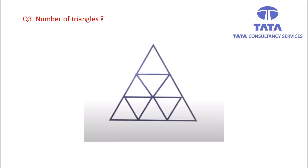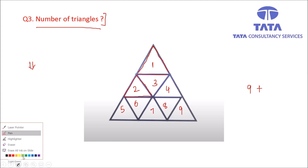Now we need to find the number of triangles in a figure — this type of question appeared in last year's TCS NQT as well. Try to find it yourself first. So: 1, 2, 3, 4, 5, 6, 7, 8, 9 — these are the small individual triangles we can see. Then there is the outer big triangle — the main triangle formed by the 3 sides. So 9 plus 1 equals 10 so far.